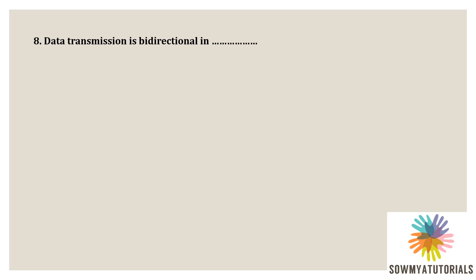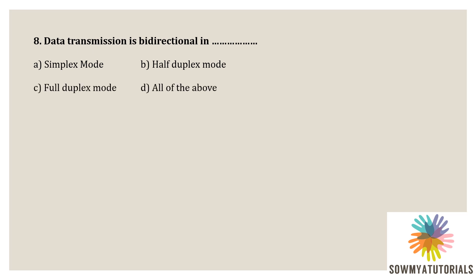Next question: data transmission is bidirectional in which option? Option A - simplex, option B - half duplex, option C - full duplex, option D - all of the above. The correct answer is option C, full duplex mode, because in full duplex mode the sender can send the data and also receive the data simultaneously. So it is a two-way directional communication simultaneously, that is called bidirectional. Data transmission is bidirectional in full duplex mode.